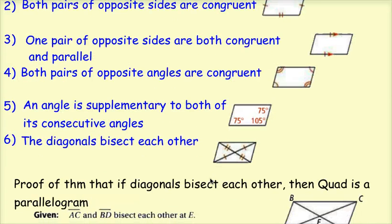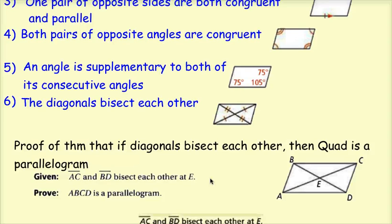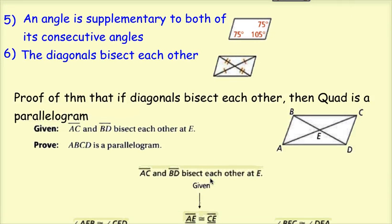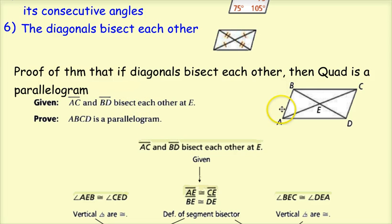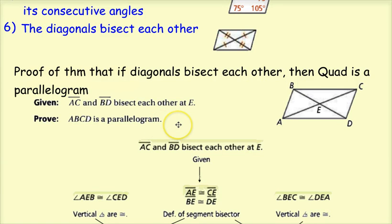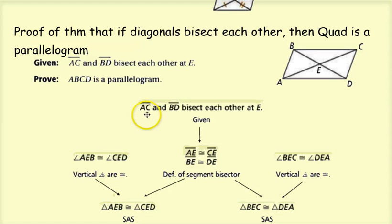You don't have this proof in your notes, so just follow along. This is a proof of the theorem that if the diagonals bisect each other, then the quadrilateral is a parallelogram. I'll start by knowing that diagonals AC and BD bisect each other at point E. If they bisect each other, then AE is congruent to CE, and BE is congruent to DE — by the definition of segment bisector.